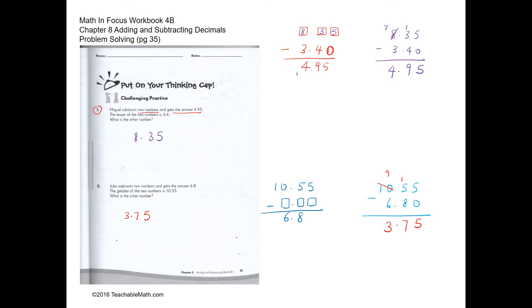And we can always double check. So if we have 3.75, we get 6.8, we can check. Yep. So 3.75 is the answer.